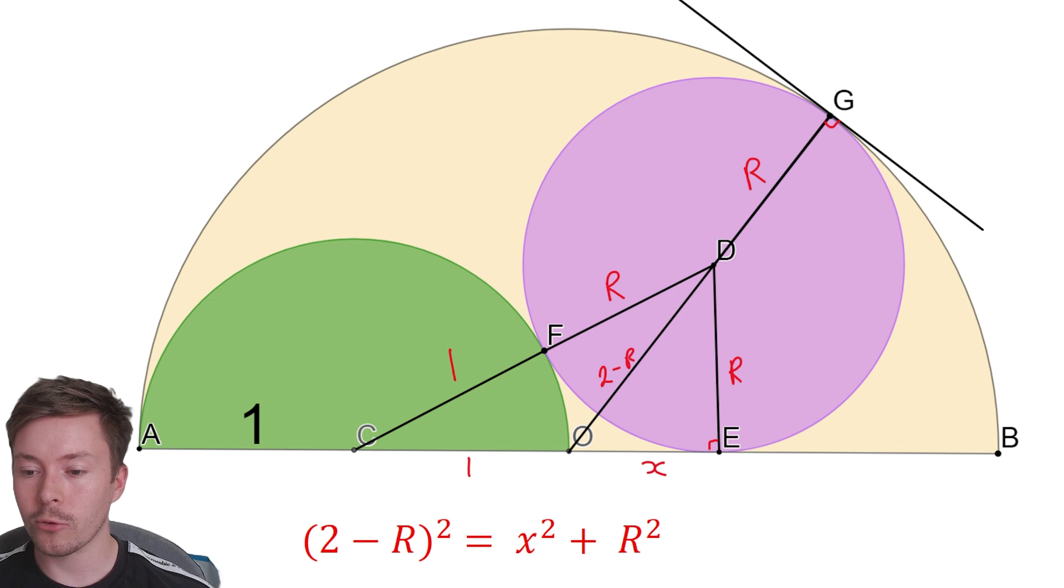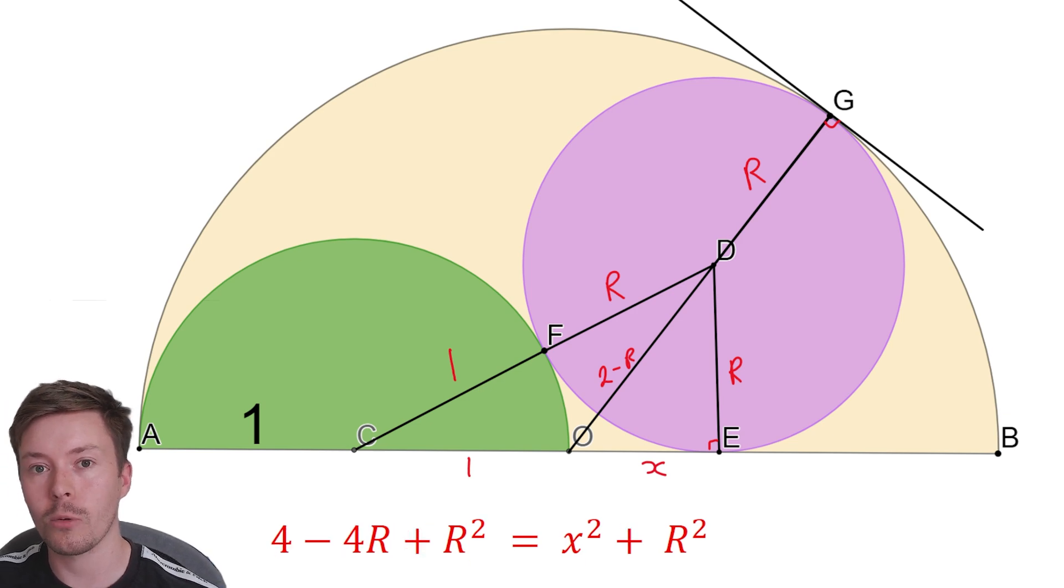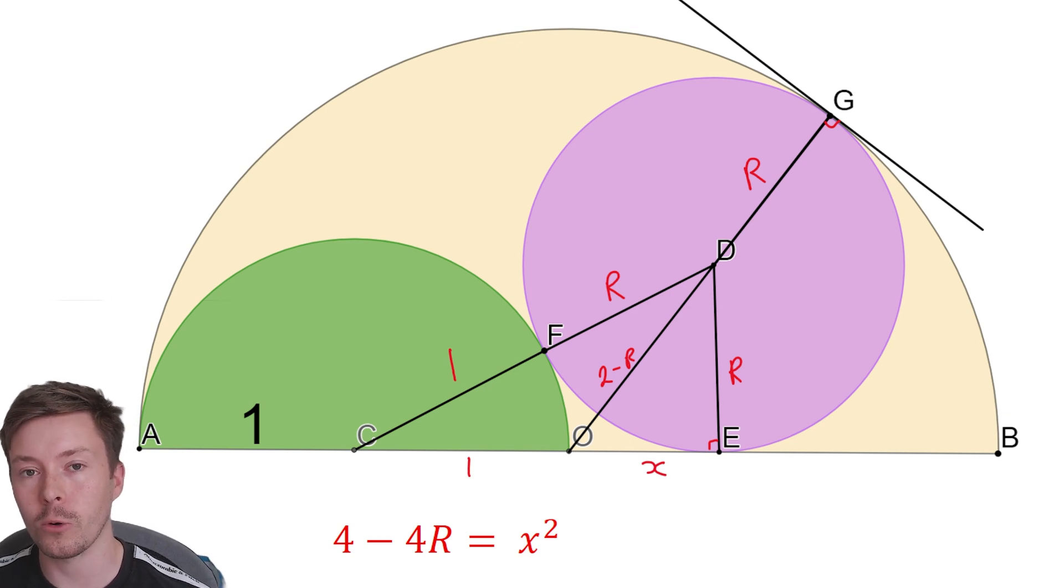Using Pythagoras, we have got 2 minus R squared, so this is Pythagoras for O, E, D, that triangle. 2 minus R squared, the hypotenuse, is equal to X squared plus R squared. Now we're going to expand the bracket, so we get 4 minus 4R plus R squared equals X squared plus R squared. The next thing to do logically would be to cancel out the R squareds on both sides, and that gives us 4 minus 4R equals X squared.